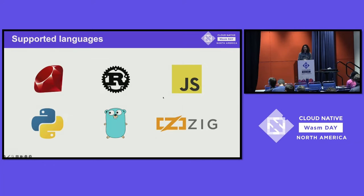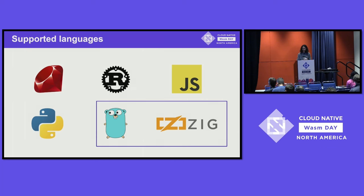These are all the supported languages today. We support Ruby, JavaScript, and Python on the interpreted side, and we also support Rust, Go, and C. Go and C were external contributions — people decided they wanted those languages in Wasm Worker Server and created SDKs, which is a great sign that people want to use the languages they know.